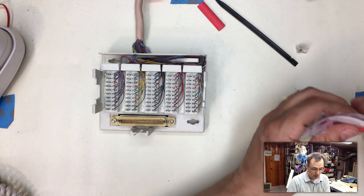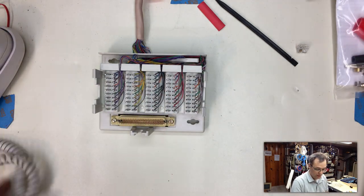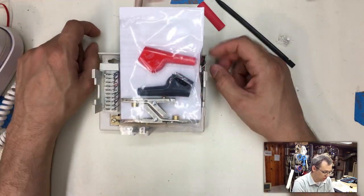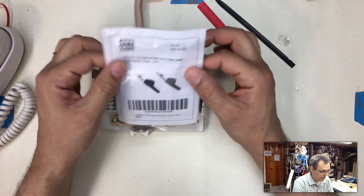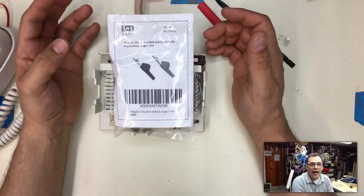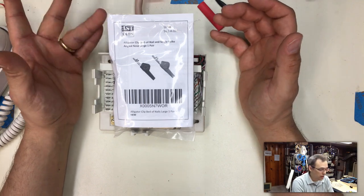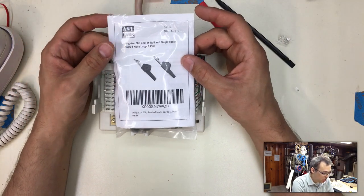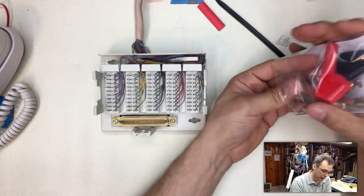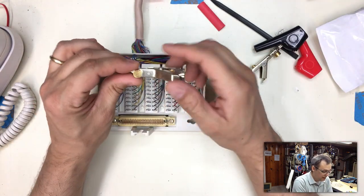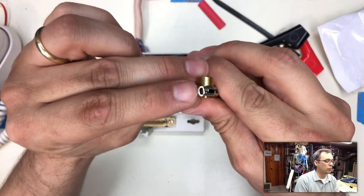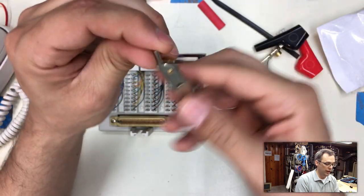The big secret with a lineman's butt set are those things. These are what you need in order to connect to these correctly. These are a special kind of clip called, and usually they're called ABN.